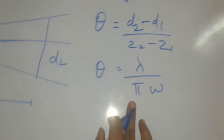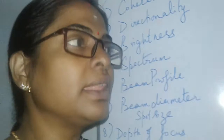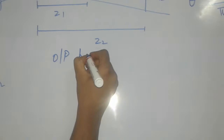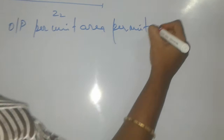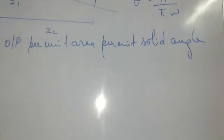Next is brightness. Brightness depends on the number of photons coming out — that is nothing but the intensity, which is the laser output power per unit area per unit solid angle. This is the measure of brightness of the laser source.